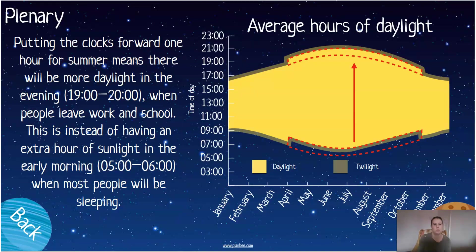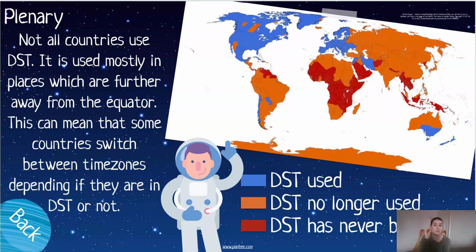Putting clocks forward one hour in summer means we have more daylight in the evenings — so when you leave school or finish work at five or six o'clock, it's actually lighter. That extra hour is tacked onto the end of the evening rather than the morning. Not all countries use this, though — it depends on where they are in relation to the equator. Countries close to the equator are always closer to the sun and experience similar day lengths year-round.